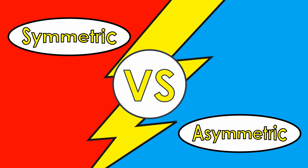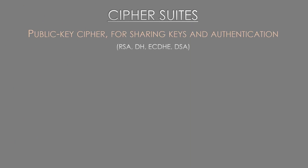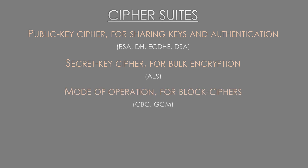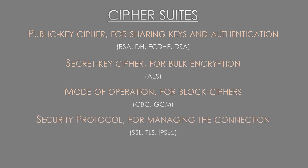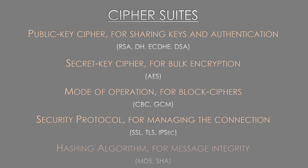The good news is that we can find a balance between the two. We can use public key cryptography like RSA or Diffie-Hellman to compute and share secret keys securely — they also offer server authentication and optionally client authentication. Secret key cryptography then quickly encrypts and decrypts the bulk of the private information. Block ciphers like AES will need a mode of operation like CBC or GCM. These combine with a security protocol — SSL/TLS, IPsec, or something else — plus a hashing algorithm like MD5 or one of the SHA algorithms to verify message integrity.